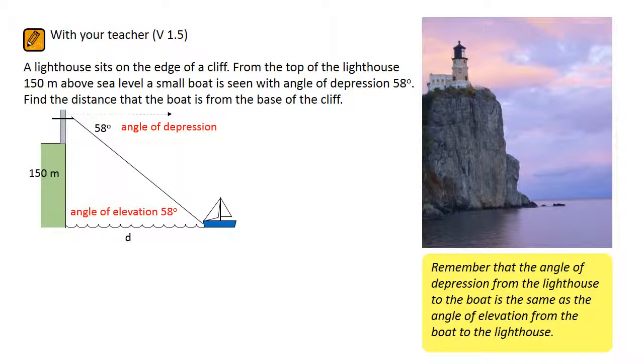If we redraw the triangle, it becomes a very simple trigonometry problem. The sides involved are opposite and adjacent. So this is a tan question. We can say the tan of 58 equals 150 divided by D.